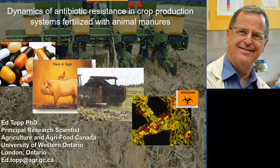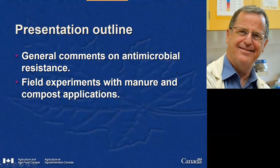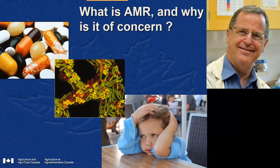We're talking about antibiotic resistance in crop production systems and the interface between animal and crop production systems. People talk about AMR as an acronym for antimicrobial resistance, but in the context of this talk we're talking about antibiotic resistance — bacteria that are pathogenic learning to be resistant to the drugs that we use to cure infections.